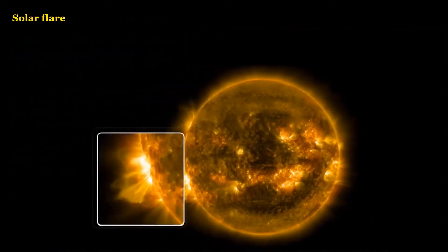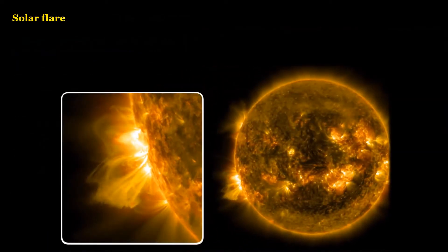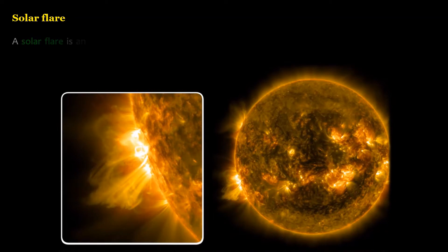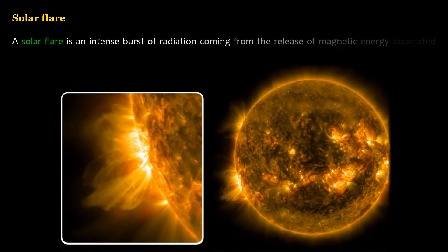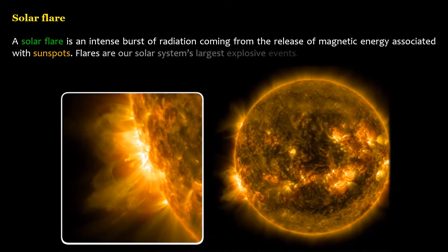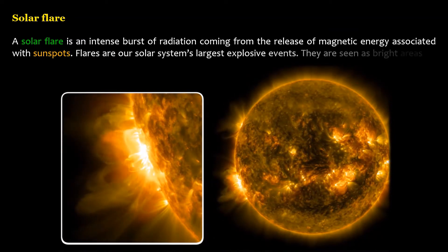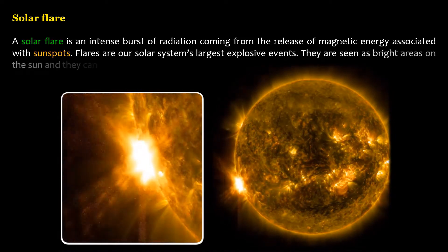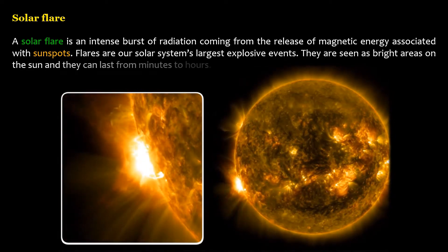A solar flare is an intense burst of radiation coming from the release of magnetic energy associated with sunspots. Flares are our solar system's largest explosive events. They are seen as bright areas on the sun and they can last for minutes to hours.